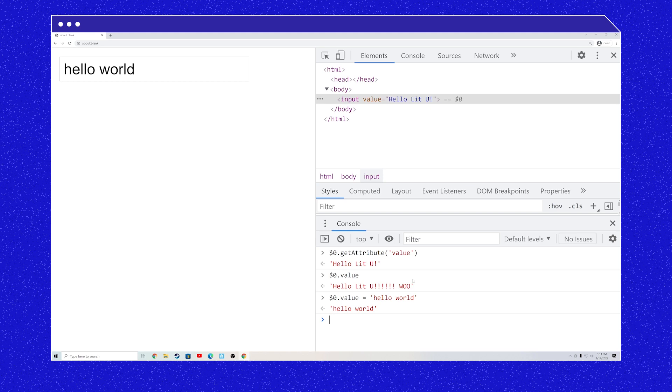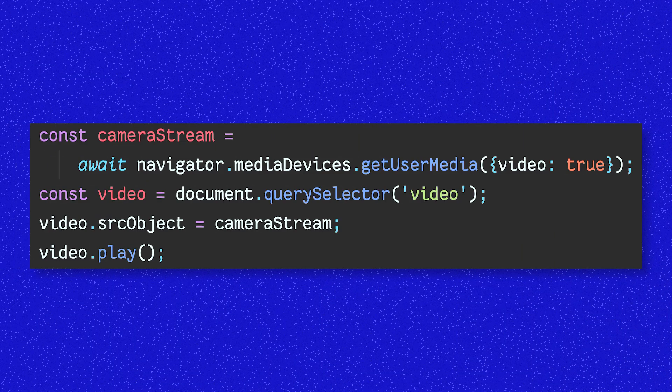Just like attributes, properties have their own excellent use cases. One good use case is to pass complex values to elements. For example, if you want to show the user's webcam in a video element, you can call the getUserMedia method, which will return a JavaScript MediaStream object — a complex object. Get a reference to the video element, then set the srcObject property on the video element to the camera stream, and then just play.